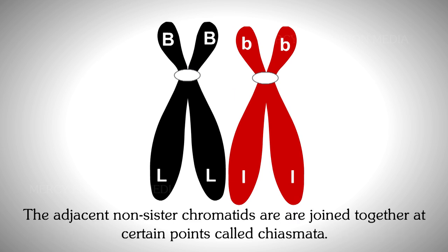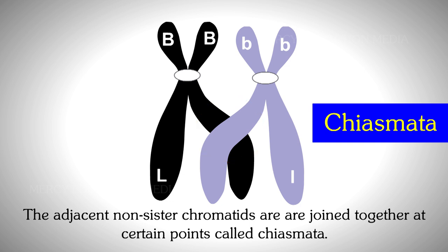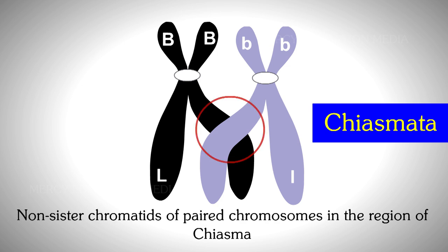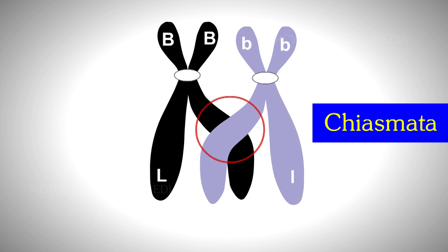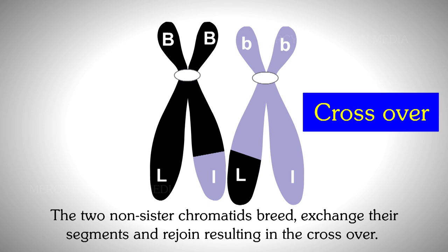The adjacent non-sister chromatids are joined together at certain points called chiasmata. Crossing over occurs between the non-sister chromatids of paired chromosomes in the region of chiasma. At each chiasma, the two non-sister chromatids break, exchange their segments, and rejoin, resulting in the crossover.